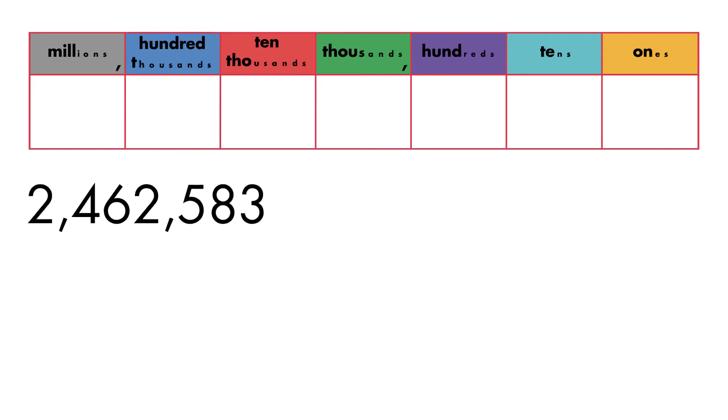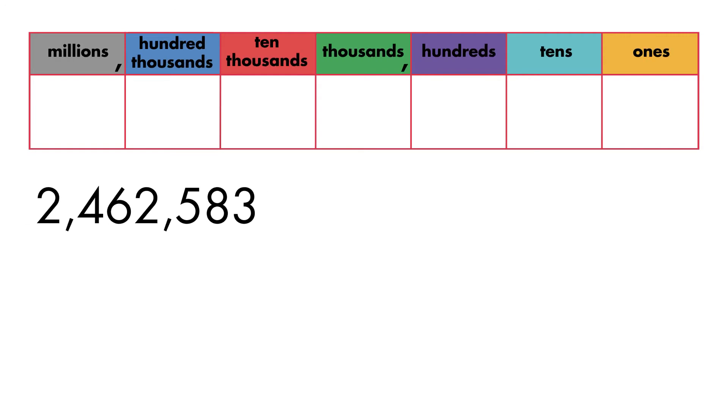To write this number in expanded form, we will start with the millions place. You can see from the place value chart that a value in the millions place has six digits that follow it. So, to show that two is in the millions place in expanded form, we will write two with six zeros after it.